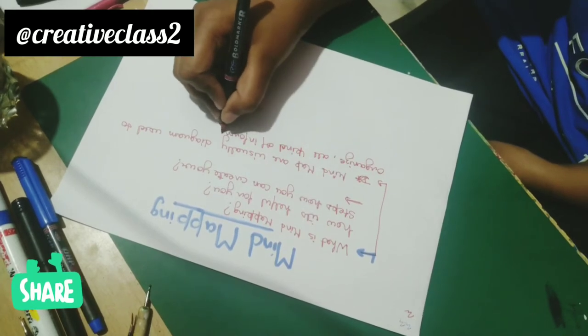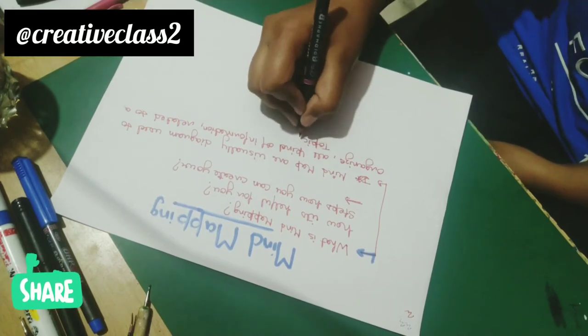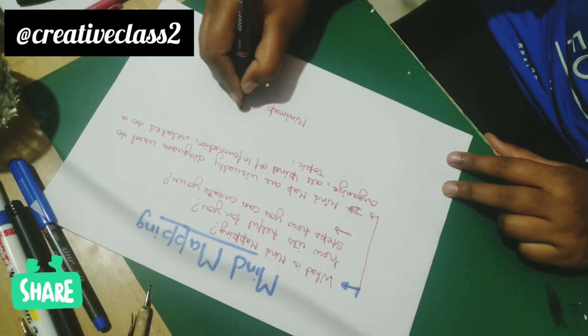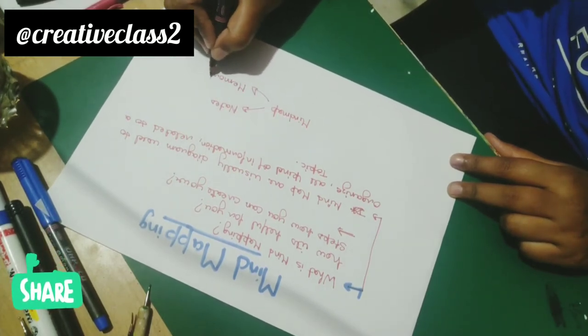Now we will move further to how you can make your own. You simply need a sheet of paper and some set of markers. Use your sheet in landscape. It provides you a wider area compared to portrait. Now let's start.